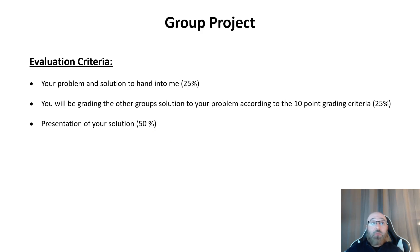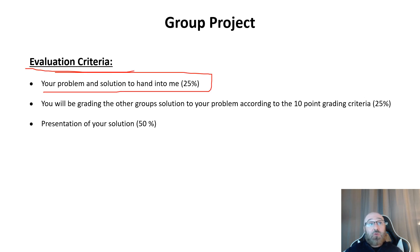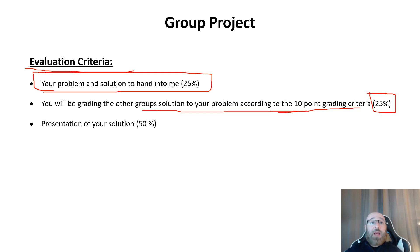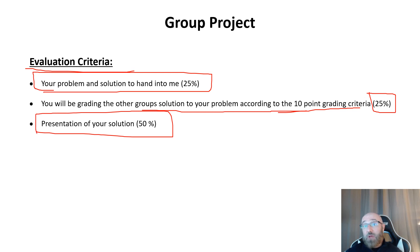Here is the evaluation criteria for the group projects. Your problem and solution that you're handing in this week is worth 25% of the grade. You'll also be grading the other group's solution to your problem using the same 10-point criteria we've used before, and this counts as another 25% of the grade. The remaining 50% is based on your presentation — the pre-recorded video submitted to Blackboard going through your solution to your problem.